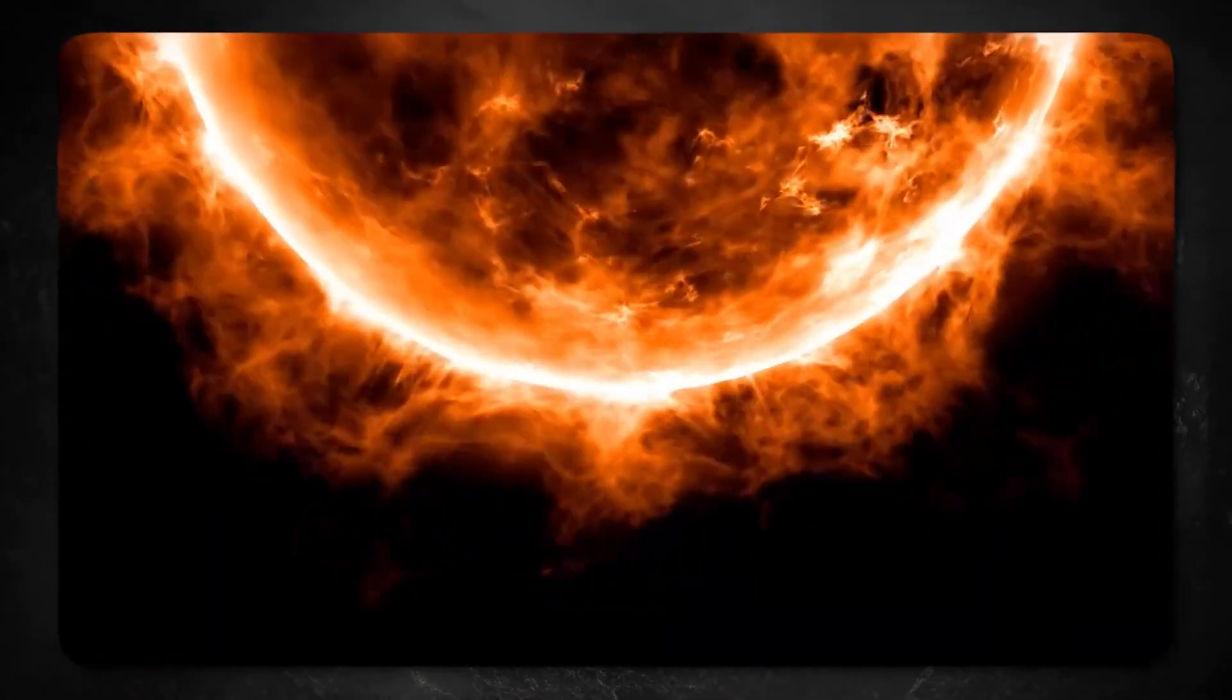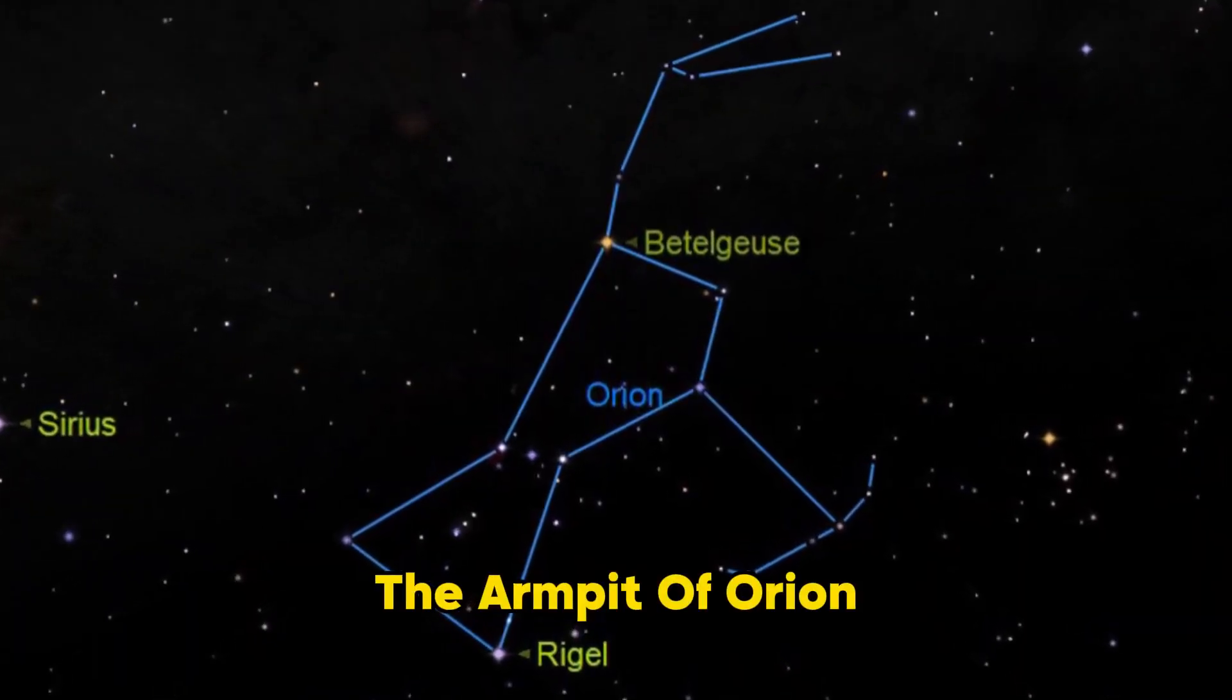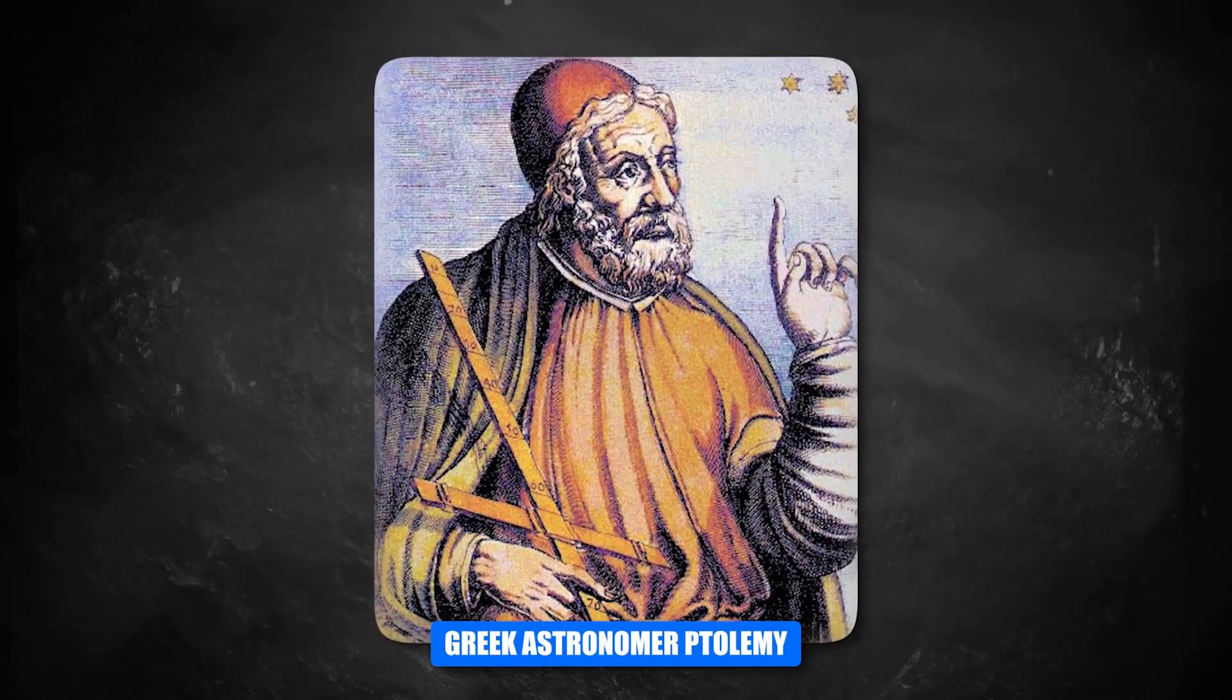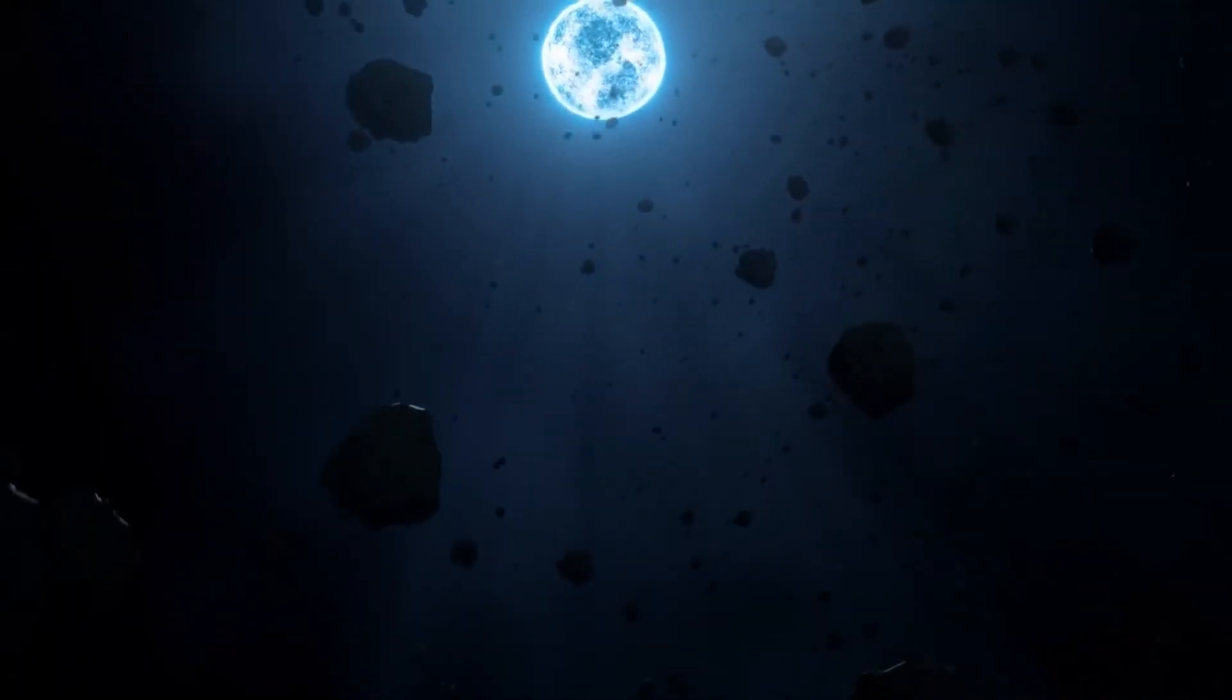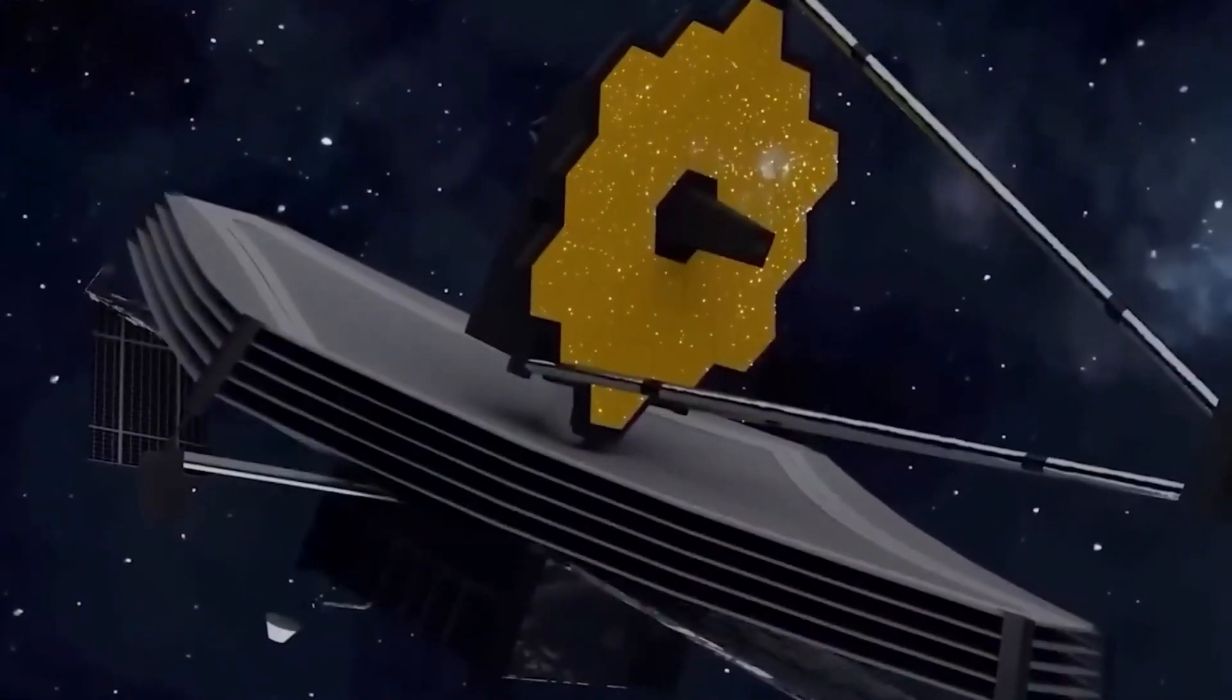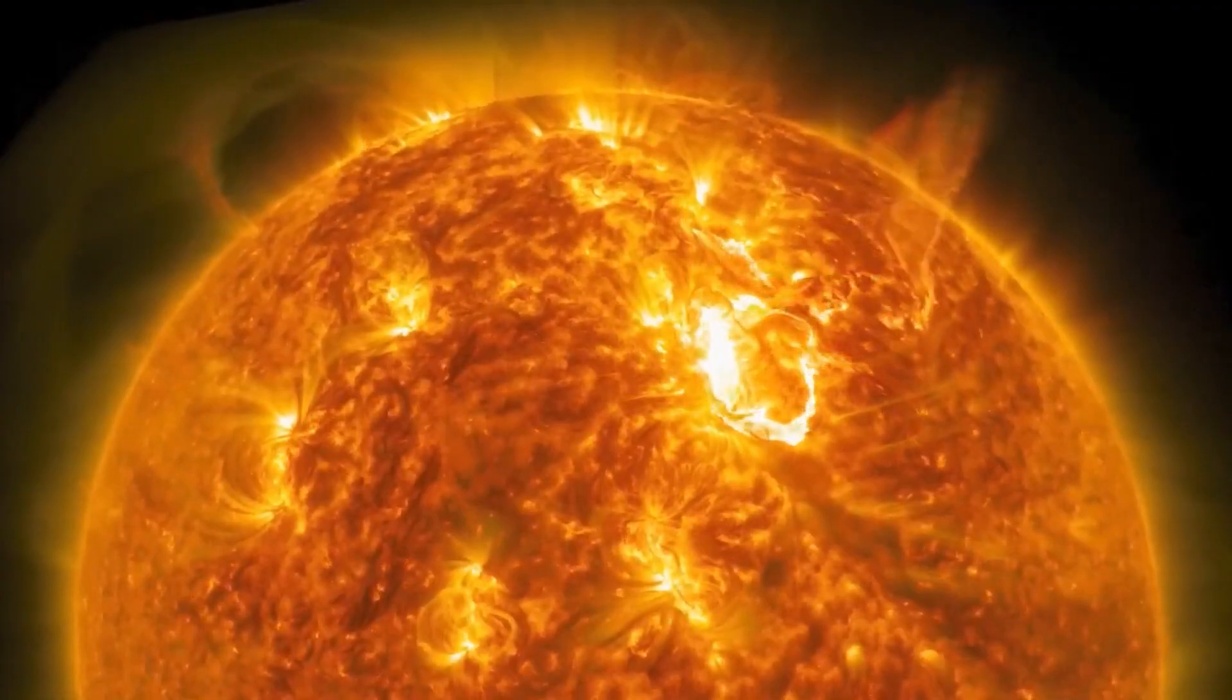Betelgeuse has been a bright star in the sky for a long time. It's called the armpit of Orion in Arabic, which is what the Greek astronomer Ptolemy called it. Back then, not much was known about this star. But now that more advanced telescopes have been made, scientists can look at Betelgeuse in great detail.